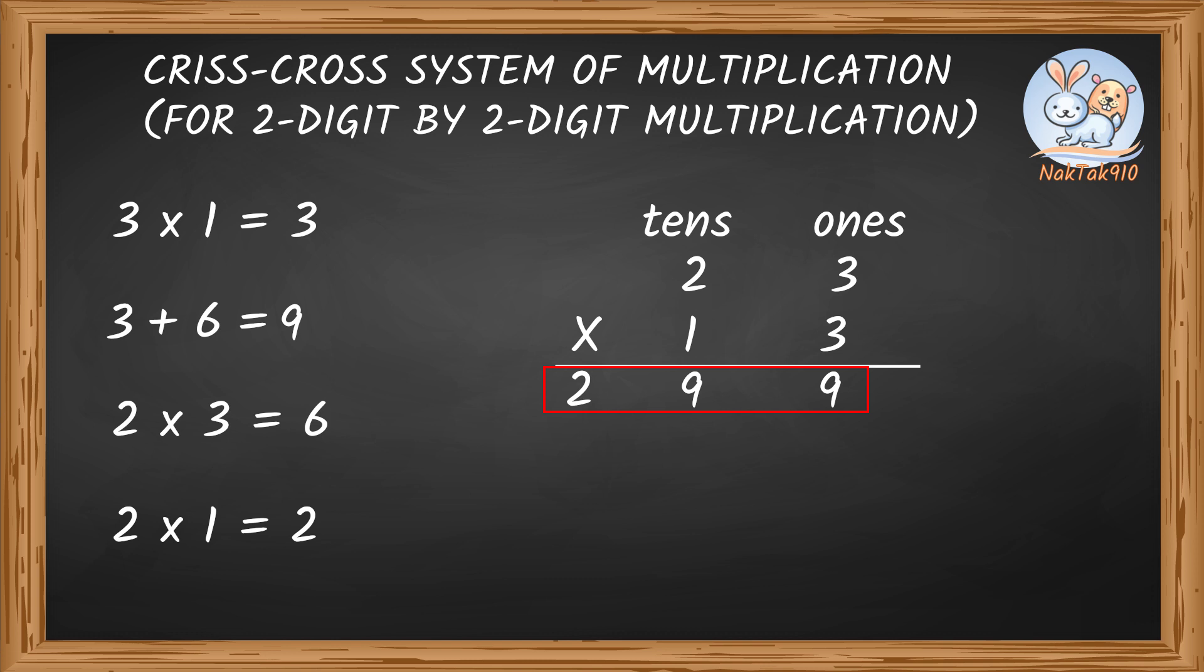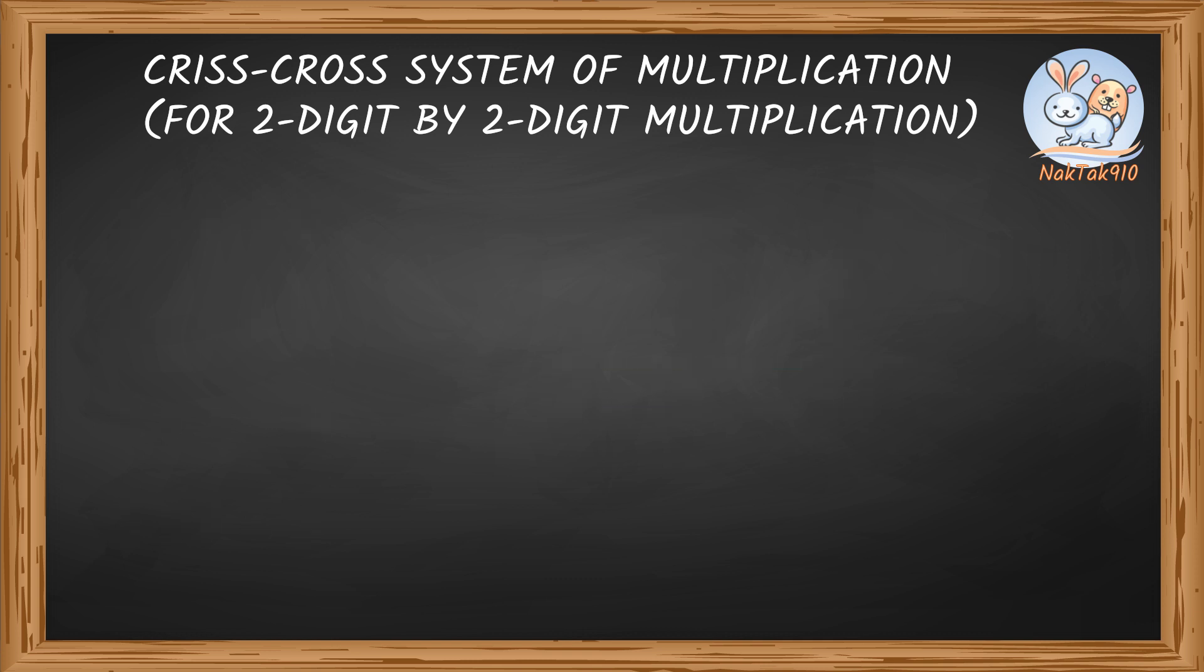Yeah, this is so simple. We got the product in one easy step. Let me try something then. Try 19 times 12. Stack the numbers in 1's and 10's place. 19 times 12.